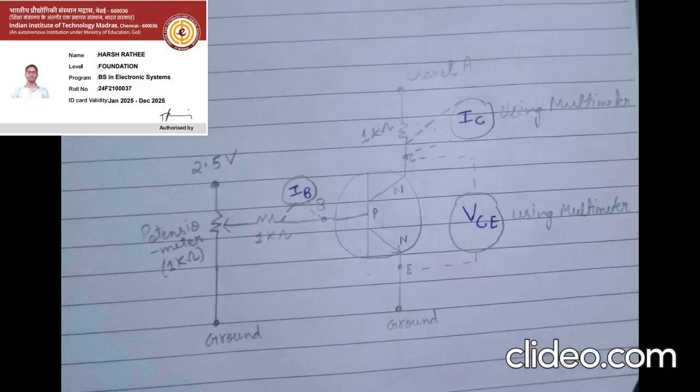This is our circuit diagram. First we use a BJT and the base terminal is connected to a potentiometer of 1 kilo ohm; the potentiometer is connected to a 2.5 volt voltage from the Adam 1000 kit and to ground. The collector is connected to a 1 kilo ohm resistor and then through channel A of the Adam 1000 kit, and the emitter is connected to ground.